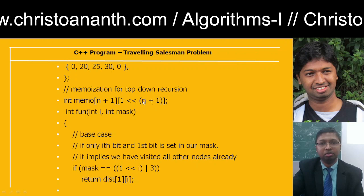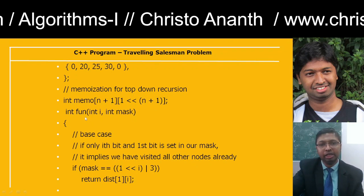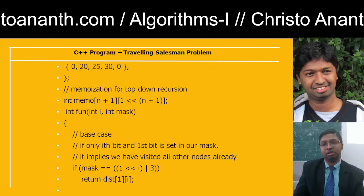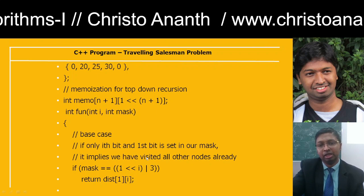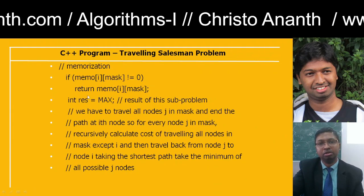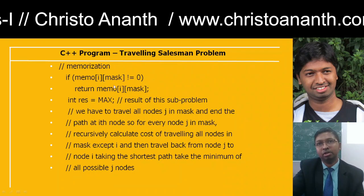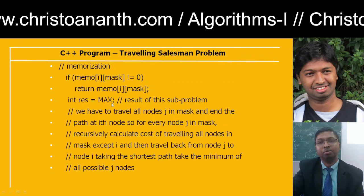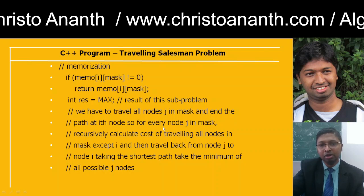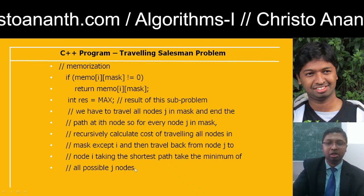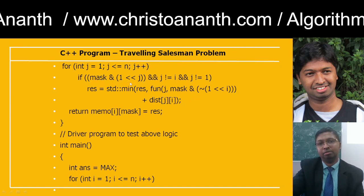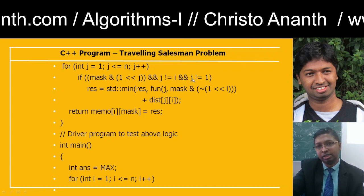We use memoization for the top-down recursion. The memo array is of size N+1. In the function fun(int i, int mask): the base case checks if only the i-th bit and the first bit are set in the mask, meaning all nodes are visited. If mask equals (1 << i) | 3, return distance[1][i]. For memoization, if memo[i][mask] is not equal to 0, return memo[i][mask]. Initialize result to MAXM, then iterate over all nodes j in the mask using: for int j = 1; j <= n; j++. In the inner loop, check if mask & (1 << j) and j ≠ i and j ≠ 1.